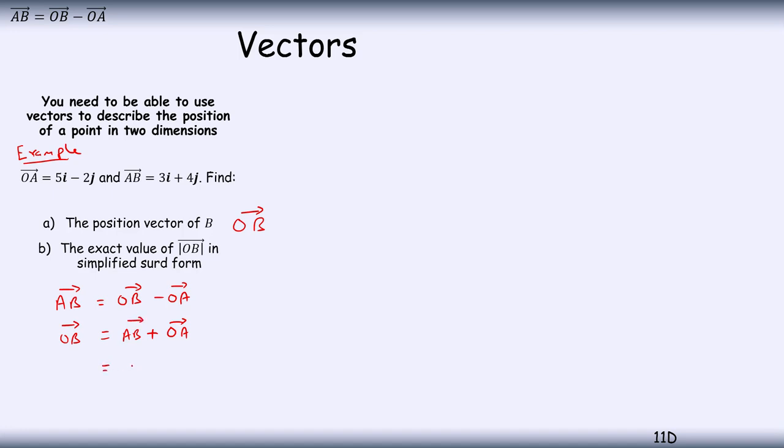So that's going to give me 3i plus 4j plus, let's use the brackets, 5i minus 2j. I don't have any issues with negatives, so I can just go straight ahead. 3i plus 5i, 8i, and then I've got 4j minus 2j, so plus 2j. That's the first part, that's part a.